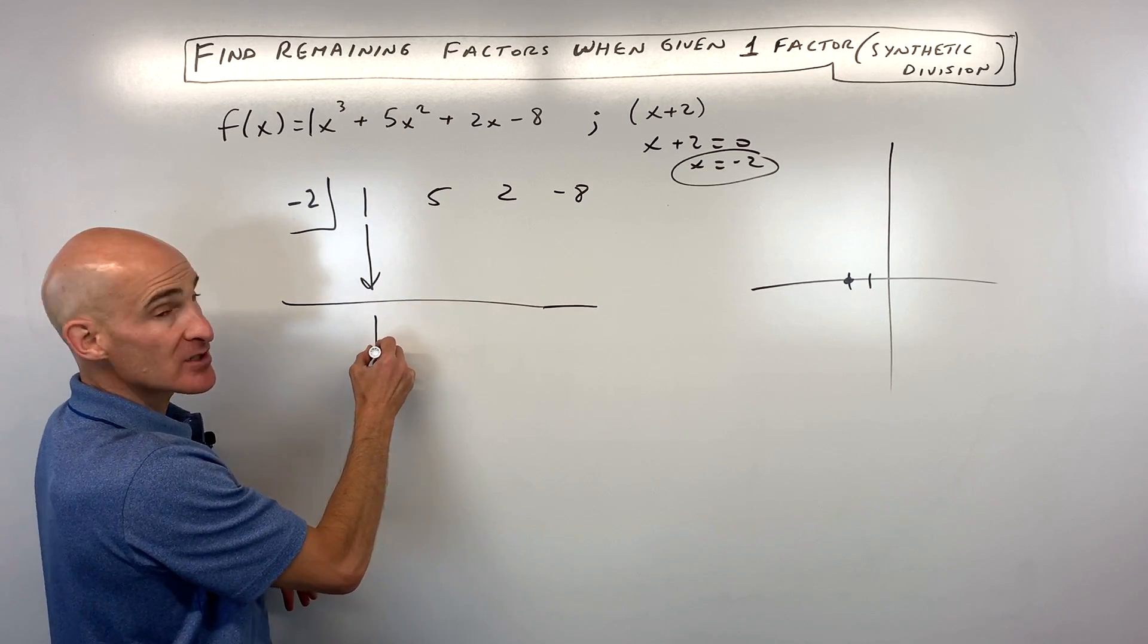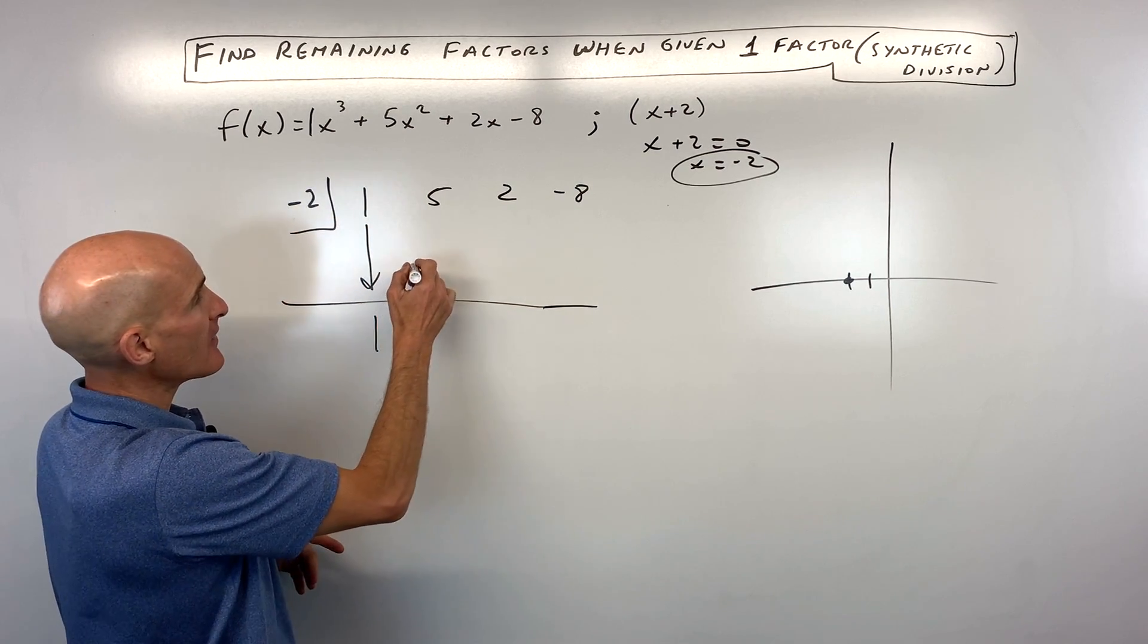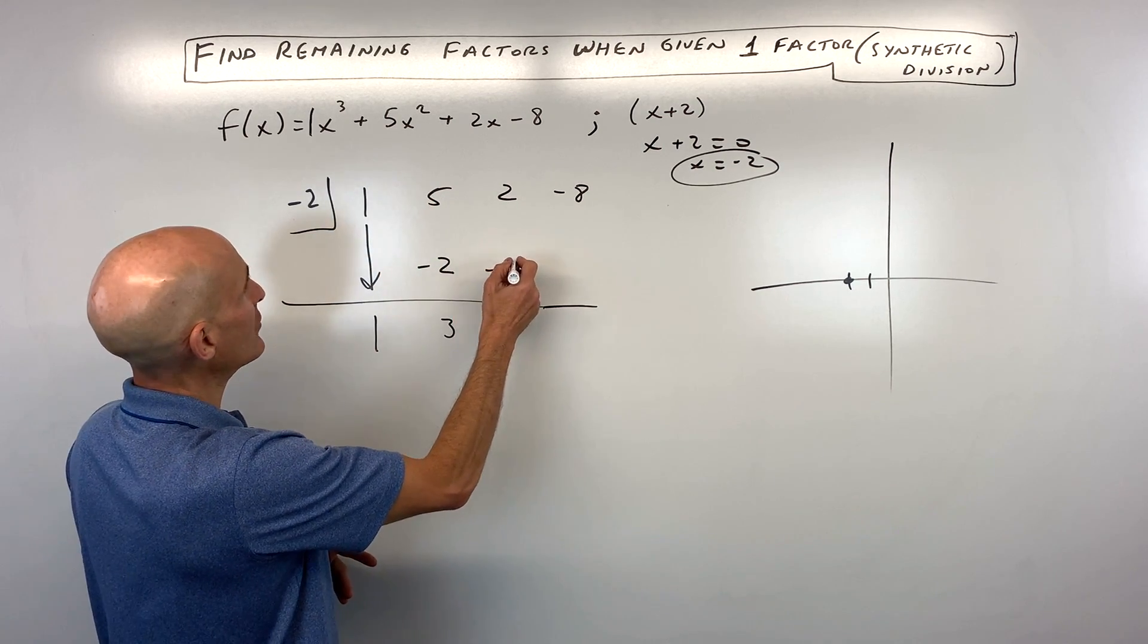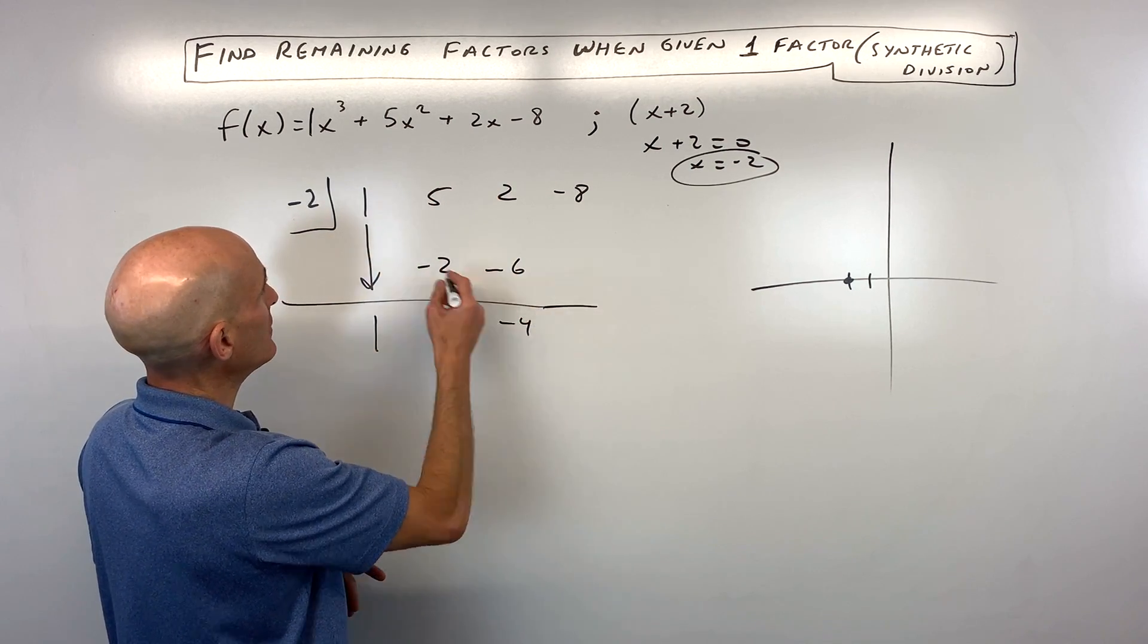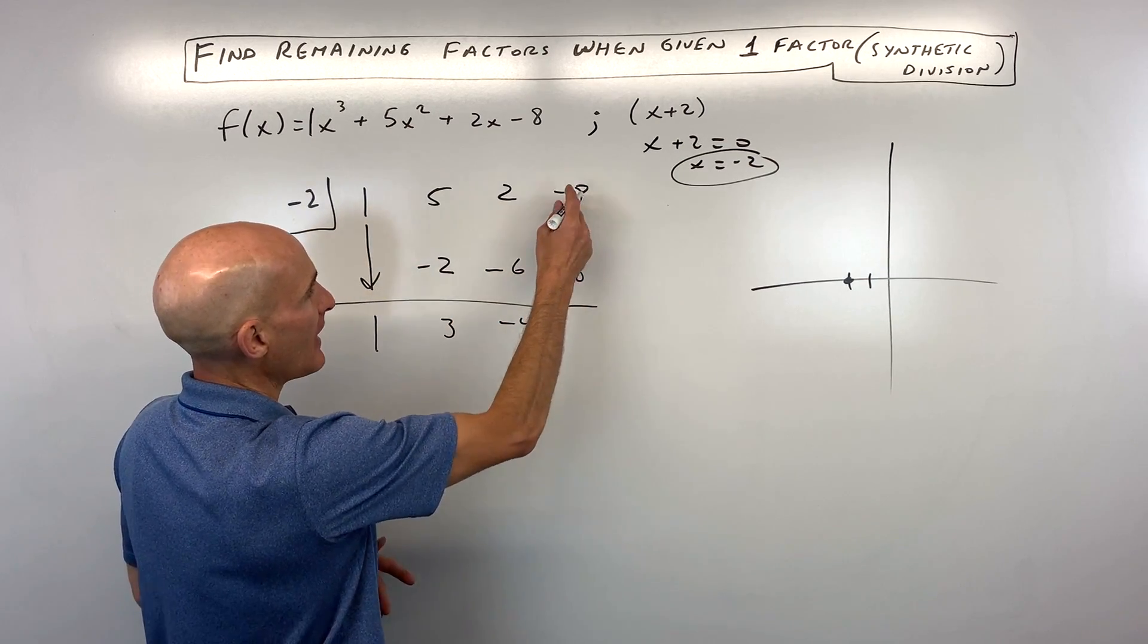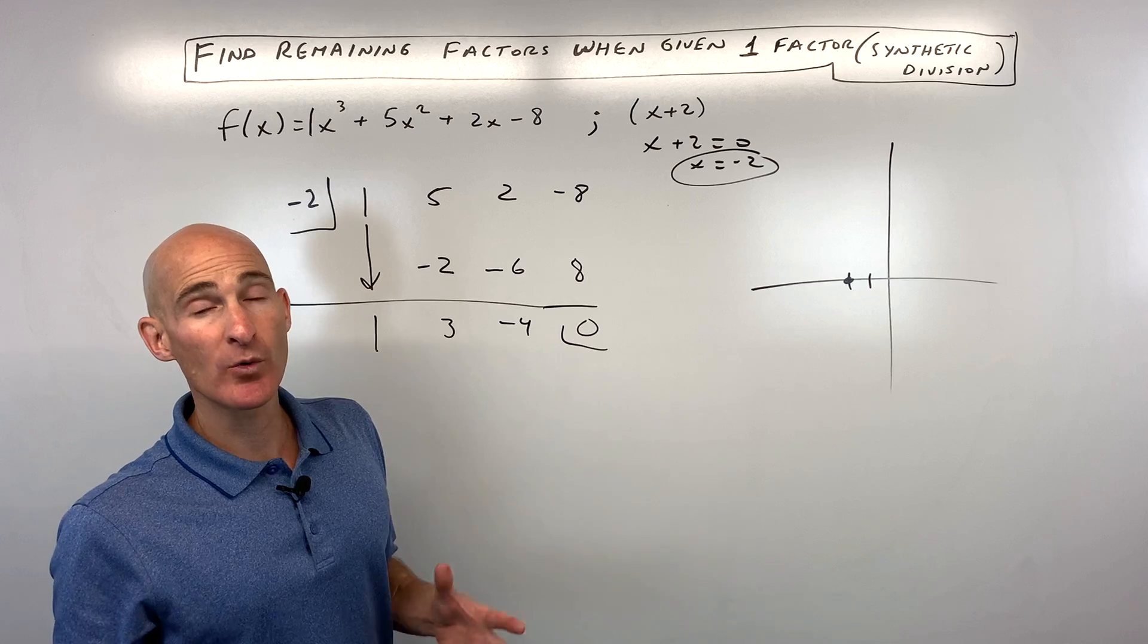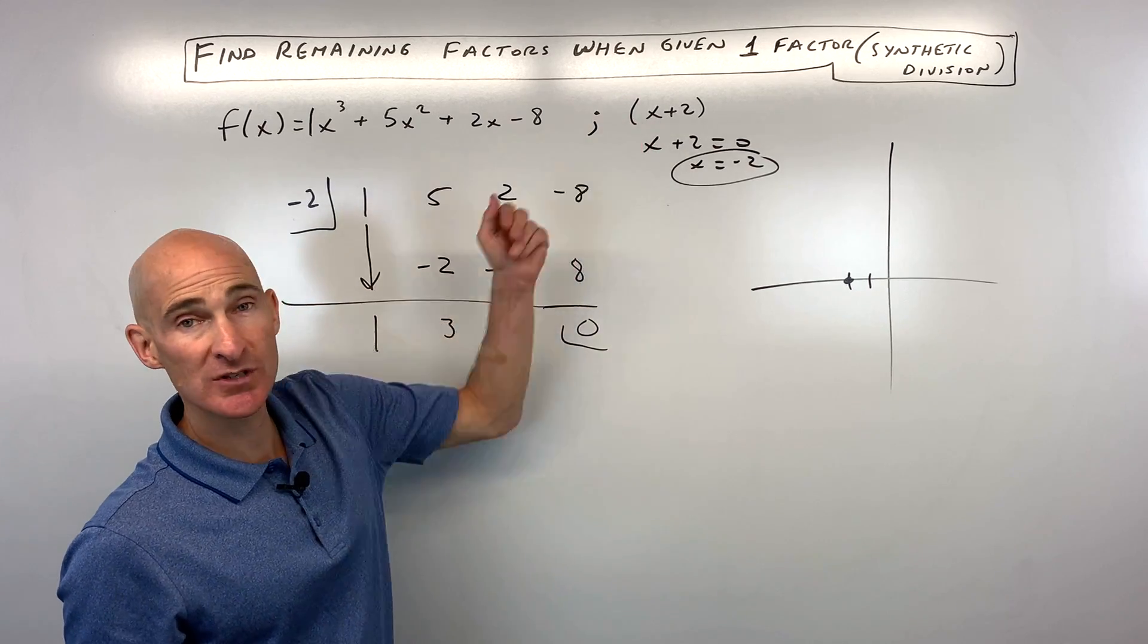You always drop down that first number. You multiply on the diagonal and you add straight down. You multiply on the diagonal and you add straight down. Multiply on the diagonal, add straight down. This last one is a remainder. In this case, there's a 0 remainder, which is what we expected because we knew that x + 2 is a factor.